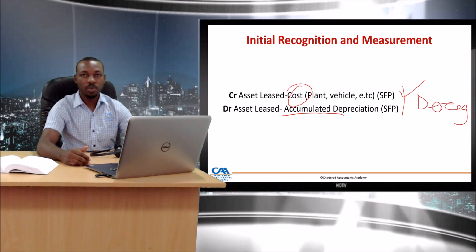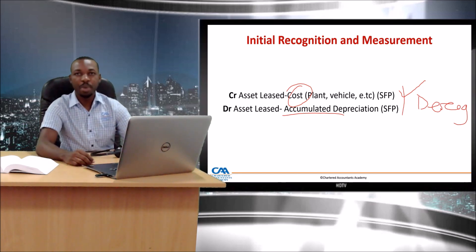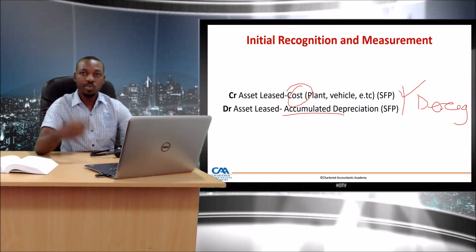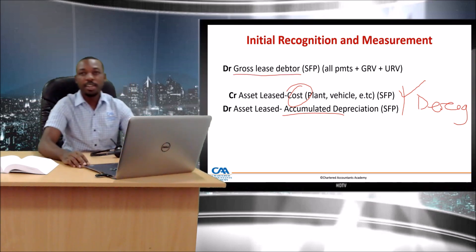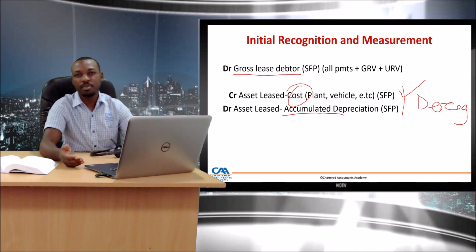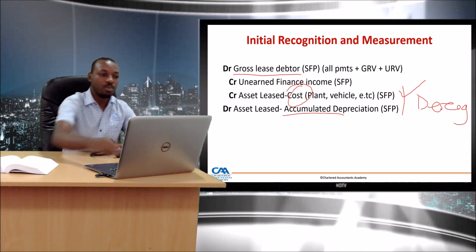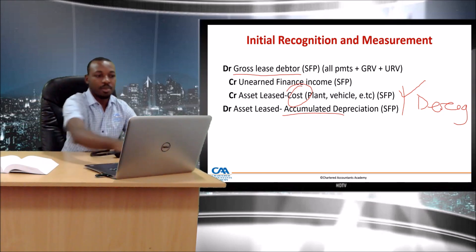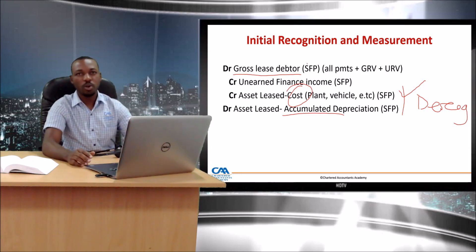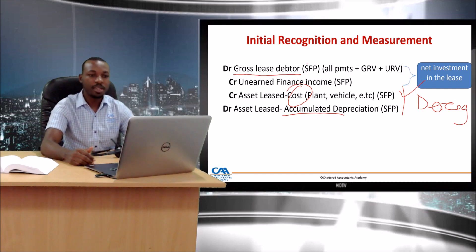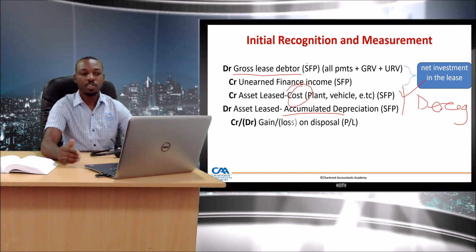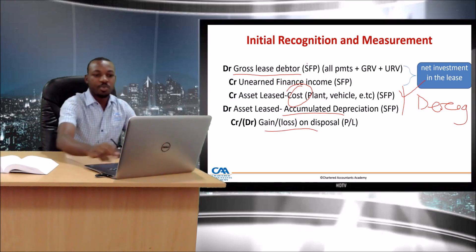Once you de-recognize the asset, the lessee owes you a series of payments. What you raise is a debtor called the gross lease debt — all the lease payments which are due. Because time value of money is important, you remove the element of unearned finance income, giving you what is commonly called the net investment in the lease. You debit the net investment in the lease and credit the asset, with the balancing figure being a gain or loss on disposal going to the P&L.